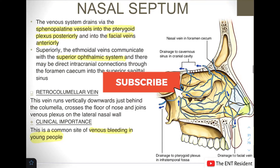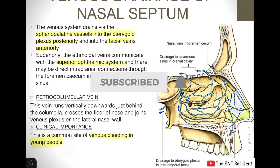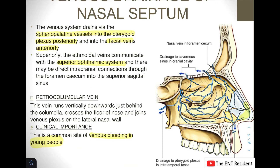We have finished our class on the nasal septum. What I have taught you is the different parts of the nasal septum, the different bones and cartilage forming it, the arterial supply, and two particular regions: Little's area or Kiesselbach's plexus, and the retrocolumnar vein. Thank you for watching, guys. I will see you in my next video.